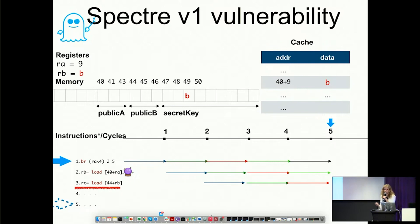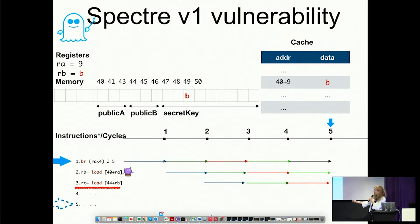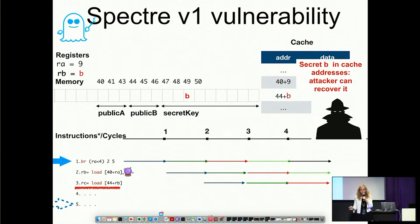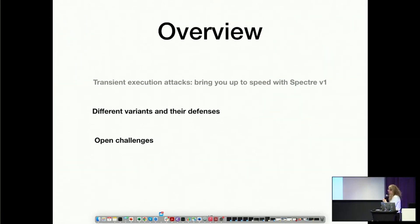The problem comes at the third instruction, where we do a second memory access at address 44 plus RV. Now RV contains the secret value loaded from the secret key. Speculatively, this address with the secret goes to cache — and cache attacks, as we know, can recover secrets from the cache. Game over. By repeating this process, the attacker can recover the whole secret key. This is bad because it has completely changed the way we look at security today.